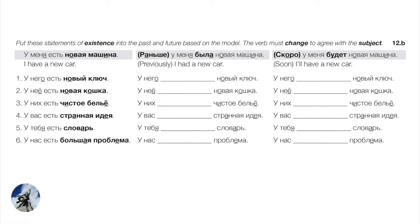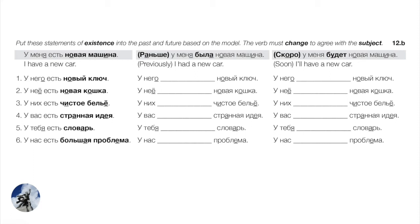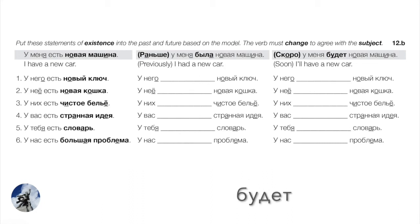Number three: У них есть чистое бельё — they have clean laundry, a neuter noun. Past: У них было чистое бельё. Future: У них будет чистое бельё. Number four: У вас есть странная идея — you have a strange idea, a soft feminine noun. Past: У вас была странная идея. Future: У вас будет странная идея.